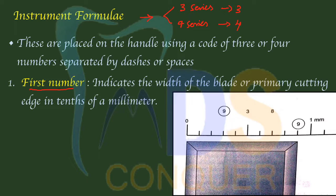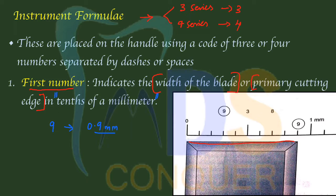The first number indicates the width of the blade, also called the primary cutting edge. It is measured in tenths of a millimeter. For example, if the first number in the instrument formula is 9, then 9 tenths means 0.9 mm is the width of the blade. So the answer will be one-tenth of the first number, in millimeters.